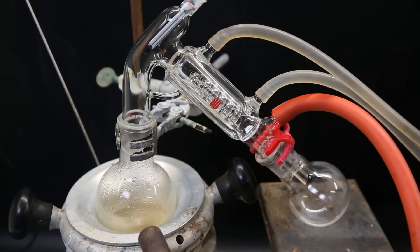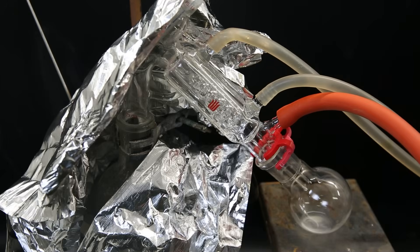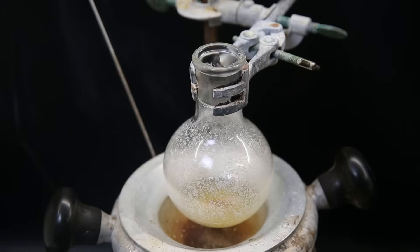When that is done, I set it up for short path vacuum distillation and distill over all of the pinene that has been liberated and the water that I added with the formaldehyde. When all of it has distilled over, I am left with a thick yellow oil with some solid bits.